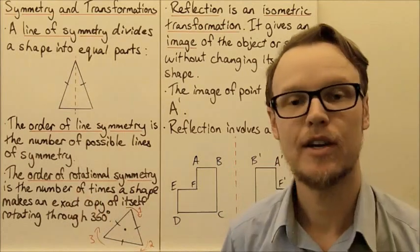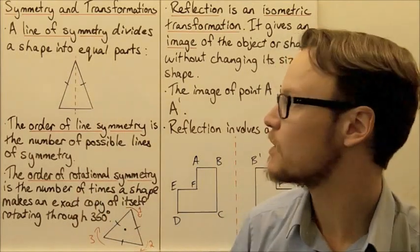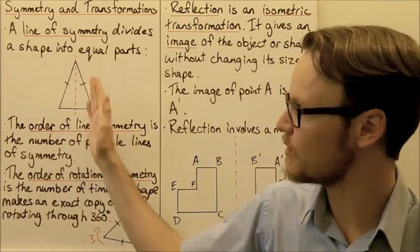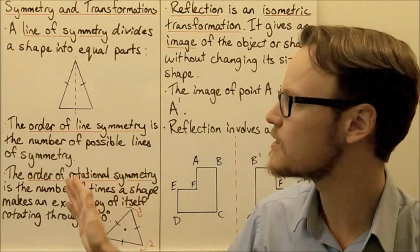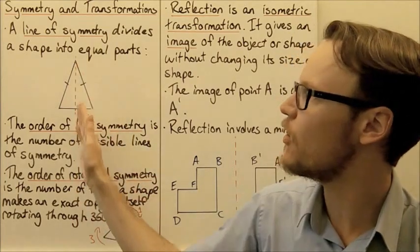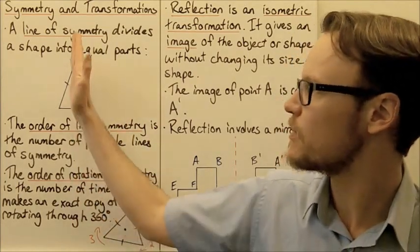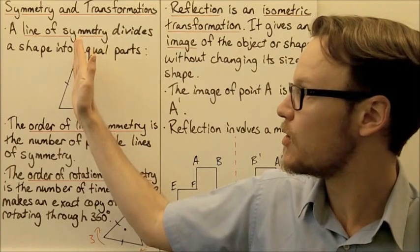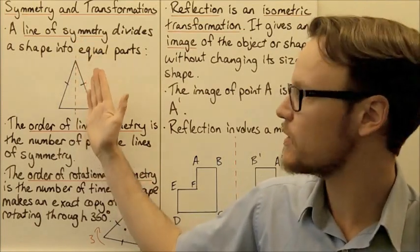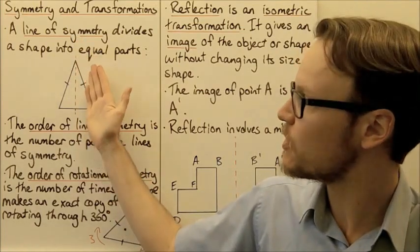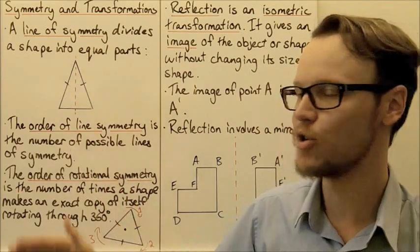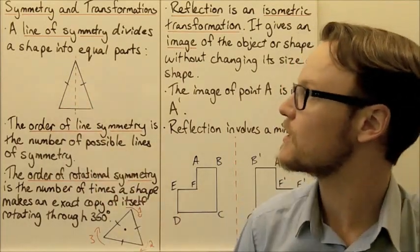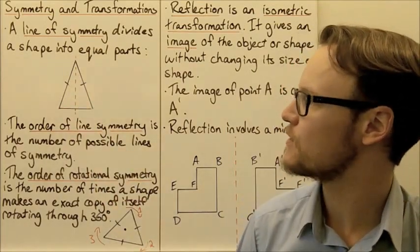There's a line of symmetry that goes right down the middle of it. There are no other lines of symmetry that could possibly split it into equal parts. This is the only line where, if we put a mirror up to it, it would be the mirror image on both sides. So for our isosceles triangle, there's one line of symmetry.